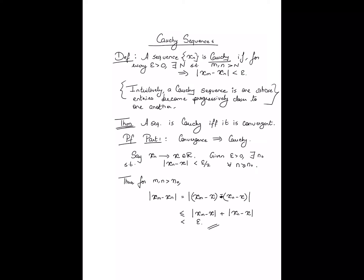We have demonstrated that no matter what epsilon you give me, I can give you a threshold n_0 such that the entries of the sequence to the right of that threshold are within epsilon distance of one another. That proves by definition that the sequence is also Cauchy. This is Part 2: we now want to argue that Cauchy implies convergence.